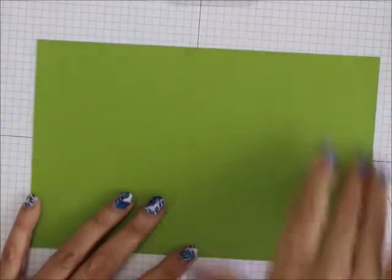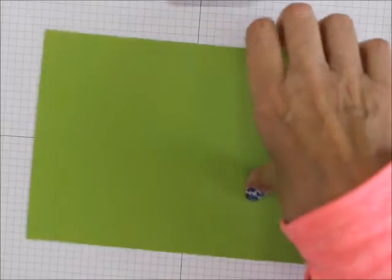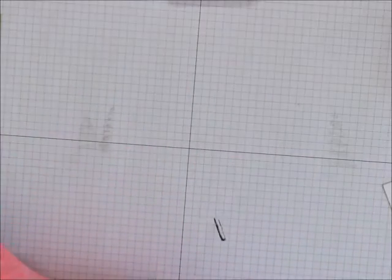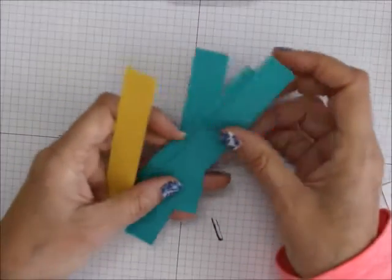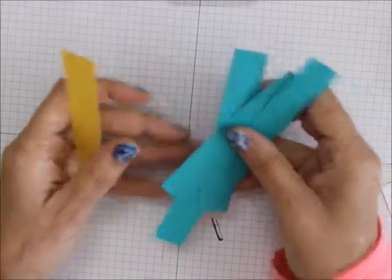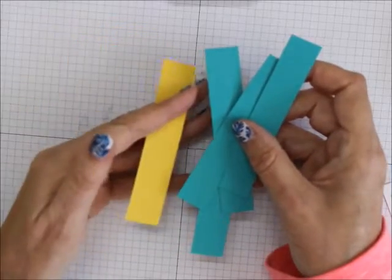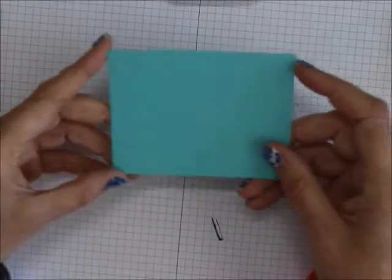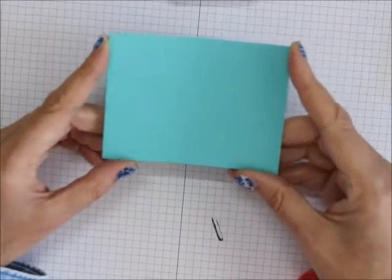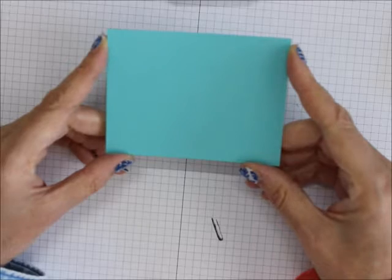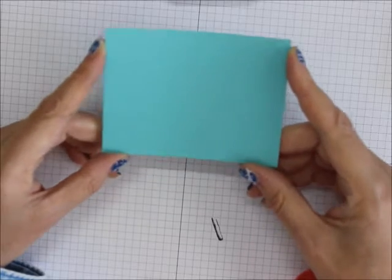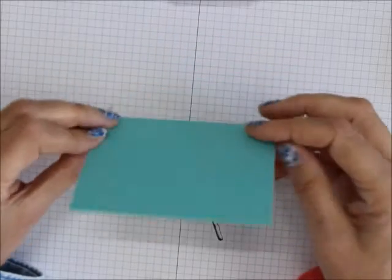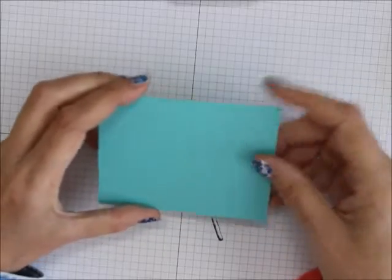For cardstock, we've got Granny Apple Green, 8 1/2 by 5 1/2. We've got 3 1/4 by 4 inches of Bermuda Bay, 4 of them of Bermuda Bay, and 1 of Daffodil Delight. And then we got this is a 3 by 4 Coastal Cabana cardstock.